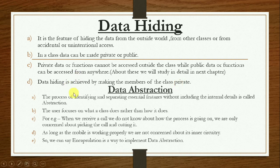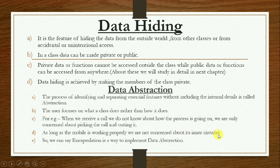Data hiding is achieved by making the members of the class private. Private data members or functions can be accessed only inside that class, not outside. Data abstraction is the process of identifying and separating essential features without including internal details. The user focuses on what a class does rather than how it does it. For example, when we receive a call, we do not know how the phone is getting connected — we are only concerned about picking or cutting the call. Encapsulation is a way to implement data abstraction.